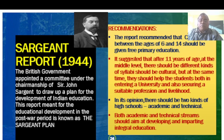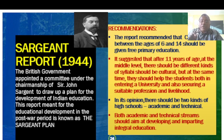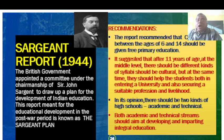Finally, the Sargent Report of 1944. The British government appointed a committee under the chairmanship of Sir John Sargent to draw up a plan for the development of Indian education. This report was meant for education development in the post-war period and is known as the Sargent Plan. Its recommendations: children between the ages of 6 and 14 should be given free primary education; after 11 years of age, at the middle level, there should be different kinds of syllabi which should be cultural and also help students in entering a university or securing a suitable profession.